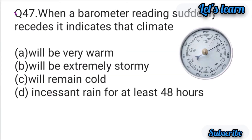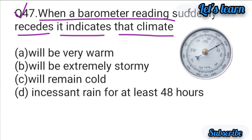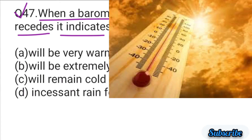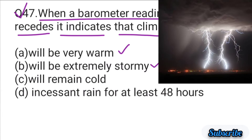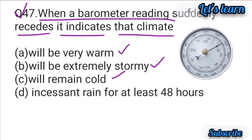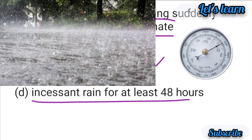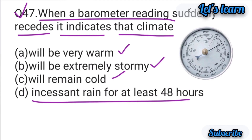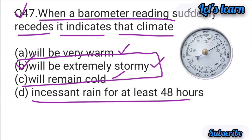Question number 47: When a barometer reading suddenly recedes (falls), it indicates that the climate — जब barometer का reading suddenly fall हो जाता है तो क्या indicate करता है? Options: climate will be very warm, climate will be extremely stormy, climate will remain cold, या incessant rain for at least 48 hours। यहाँ option B correct है — जब barometer का reading suddenly fall हो, तो climate extremely stormy होने वाला है।